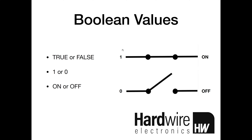The analogy used here is switches. A closed switch can be thought of as a digital one, and in this case we'll turn something on. An open switch can be thought of as a digital zero, which will turn something off. Throughout the rest of the video I'll be using true or false, on or off, one or zero — they all mean exactly the same thing.